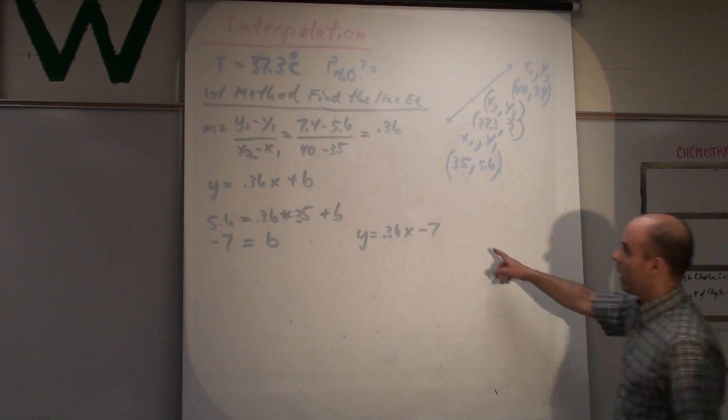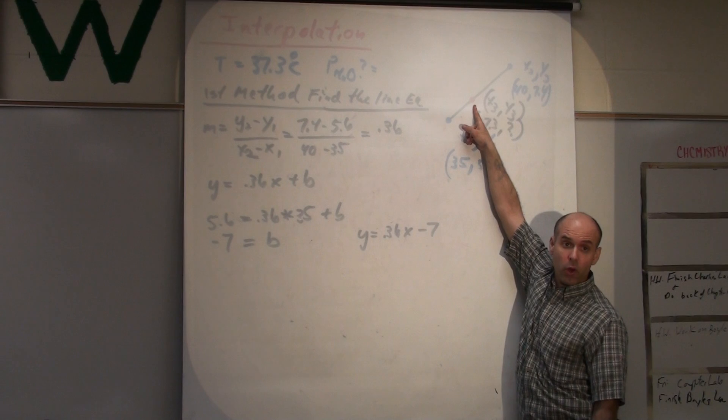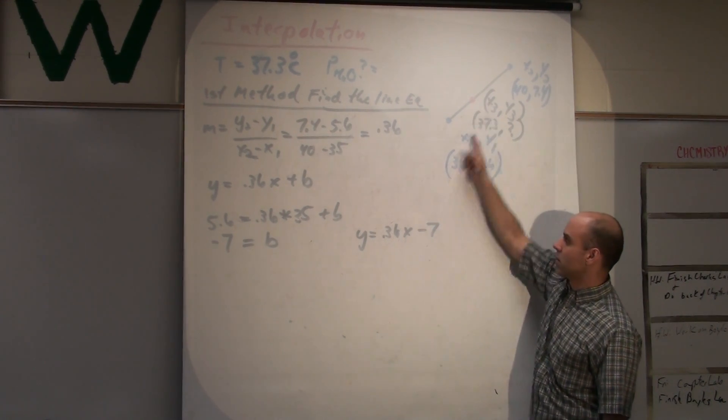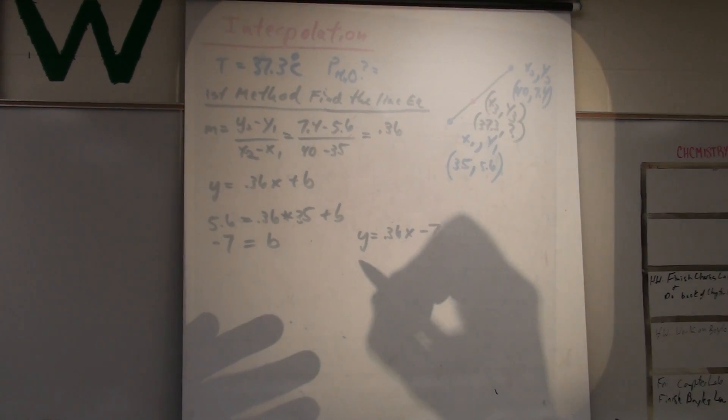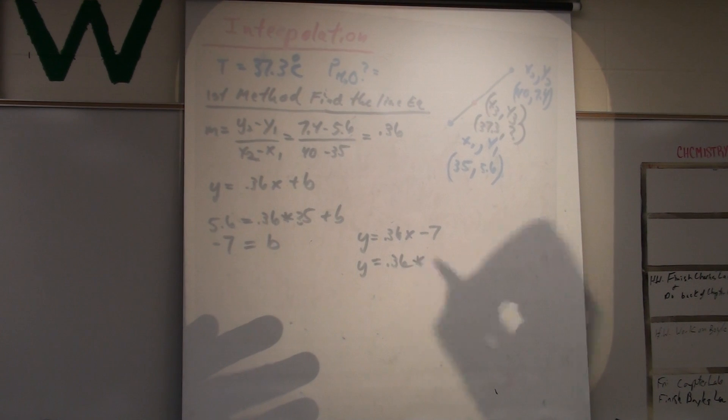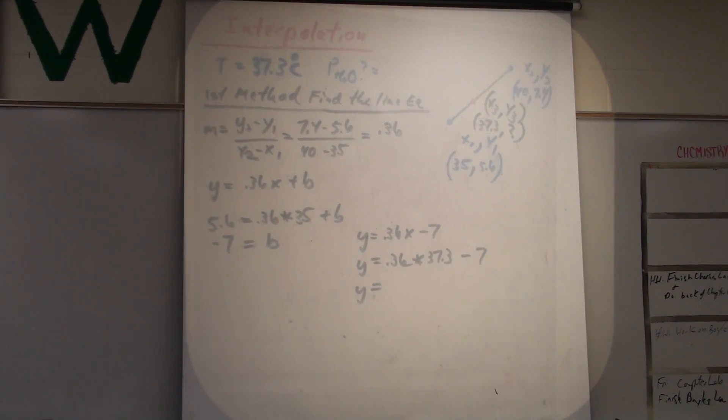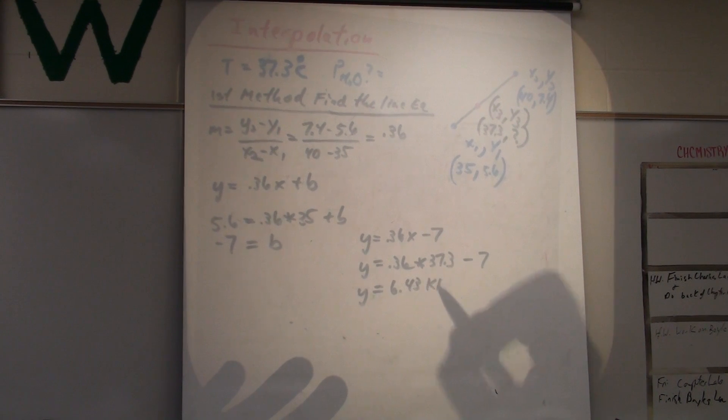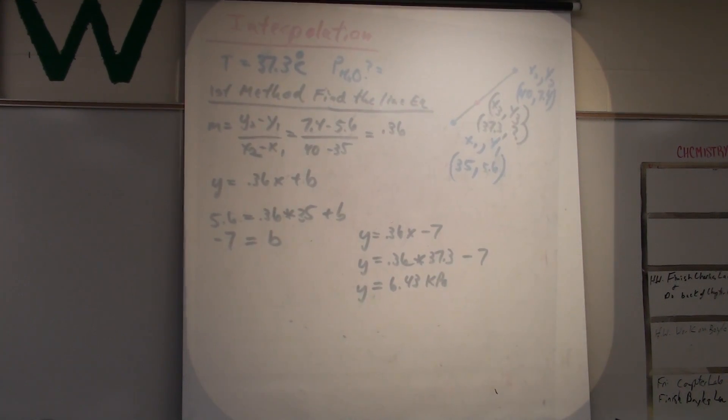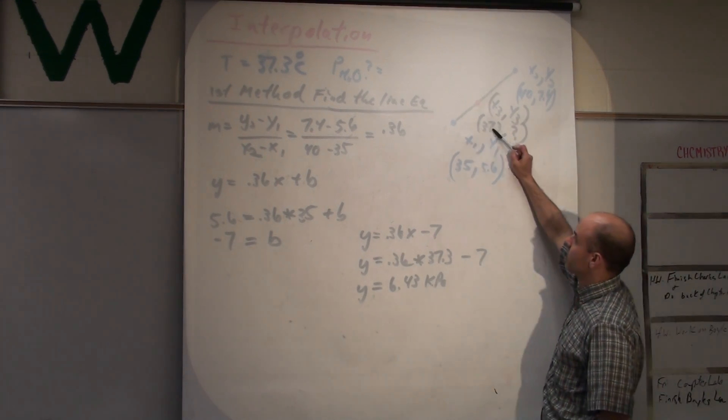So, now the equation of my line is Y equals 0.36X minus 7. Now, I've got the equation of my line. Now, I can plug in my unknown point. I know X, plug in the X, solve for Y. So, Y equals 0.36 times 37.3 minus 7. So, then Y will equal 6.43 kPa. So, that's the vapor pressure. That's the vapor pressure at 37.3.